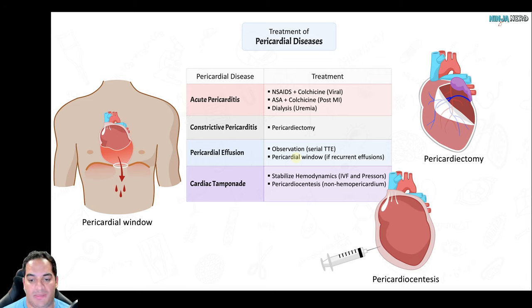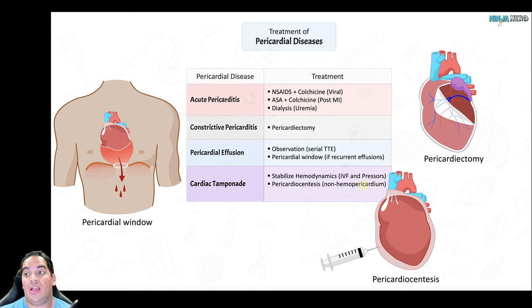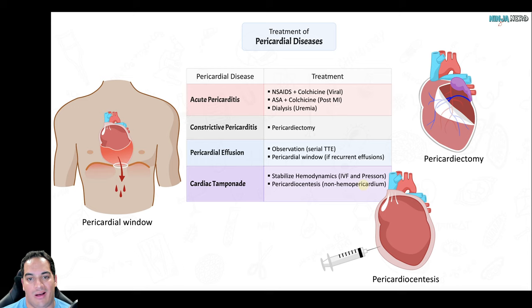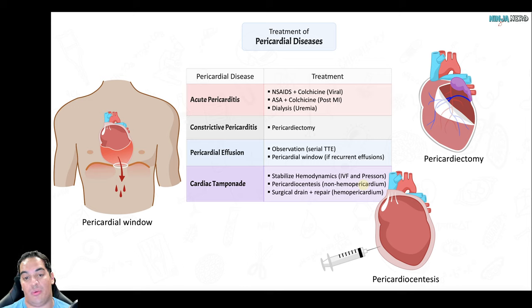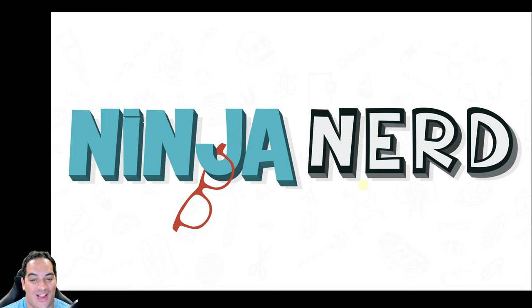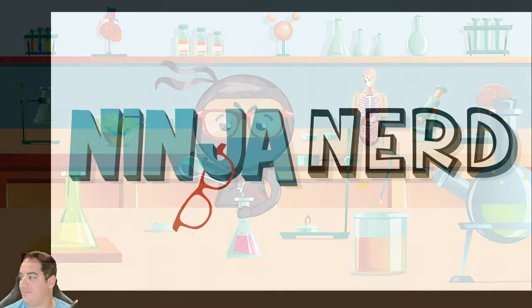Constrictive pericarditis usually requires a pericardiectomy — the pericardium is so fibrotic that you have to cut it out. For pericardial effusion: observation with serial echocardiograms; if recurrent or neoplastic in origin, a pericardial window can prevent reaccumulation. For cardiac tamponade: stabilize hemodynamics with IV fluids and vasopressors, then perform pericardiocentesis to drain the fluid — this both treats and confirms the diagnosis. If it's a hemopericardium, pericardiocentesis may not be enough and you'll need to surgically fix the underlying cause (aortic dissection, free wall rupture, trauma).